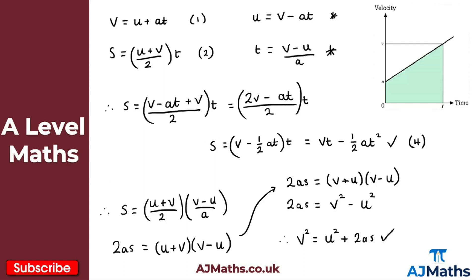So that's all five results derived. There is quite a bit of work here. The key point is that you can derive equation one and equation two using a velocity-time graph, and from there equations three, four, and five are just a matter of substituting equation one into equation two and simplifying. In the next video, we'll take a look at some exam-style questions for SUVAT equations and constant acceleration.